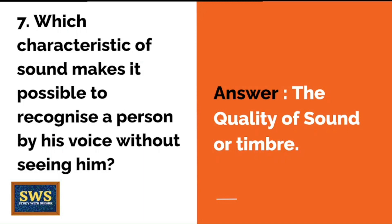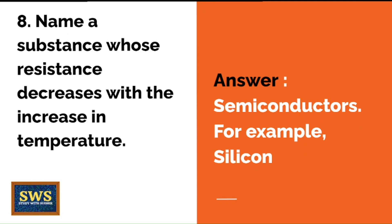Which characteristic of sound makes it possible to recognize a person by his voice without seeing him — for example, someone walking in from behind? The answer is the quality of sound, or timbre. Next: Name a substance whose resistance decreases with increase in temperature. The answer is semiconductors, and an example is silicon.